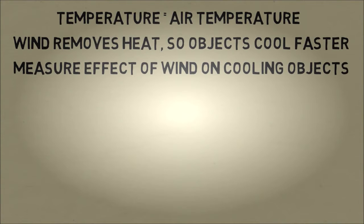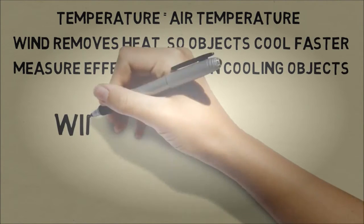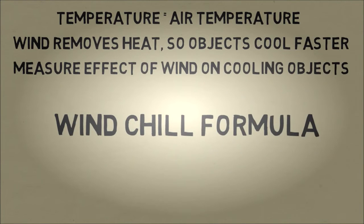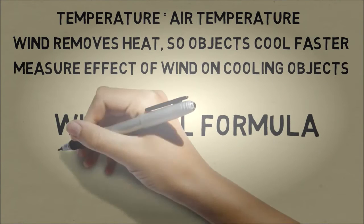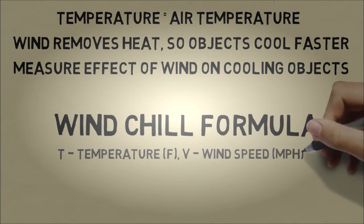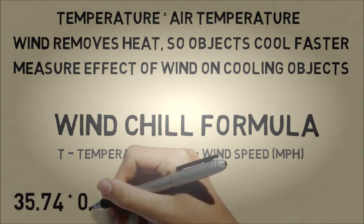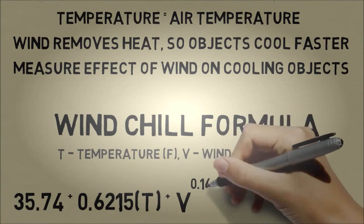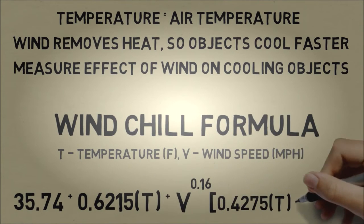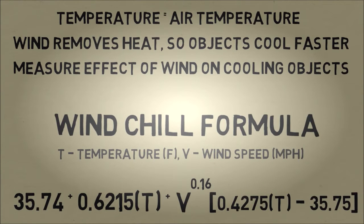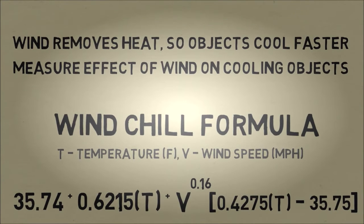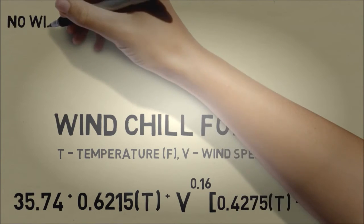In some of the original studies, they looked at how quickly water in a plastic bottle would cool when there's a lot of wind. They summarized the results in a wind chill formula. This formula takes the temperature in Fahrenheit and the wind speed in miles per hour and converts it to an equivalent temperature. The formula is 35.74 plus 0.6215 times T, plus V raised to the power of 0.16 times the quantity 0.4275 times T minus 35.75.